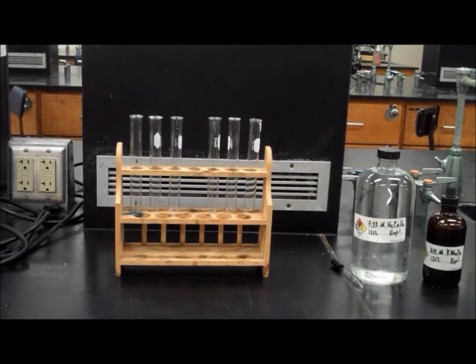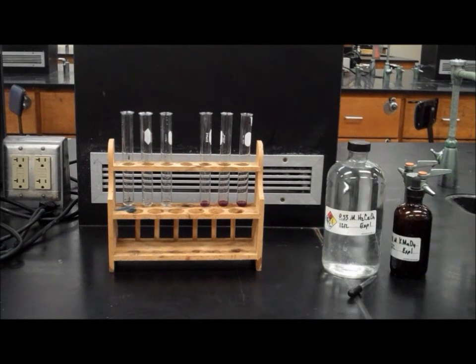First, collect six clean, large test tubes and place them on a rack found in the cabinet labeled test tube racks. Fill three test tubes with permanganate solution and fill the other three test tubes with oxalic acid solution.